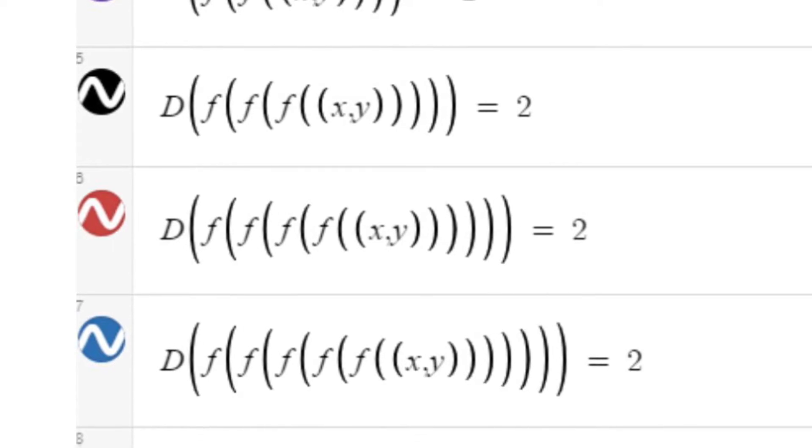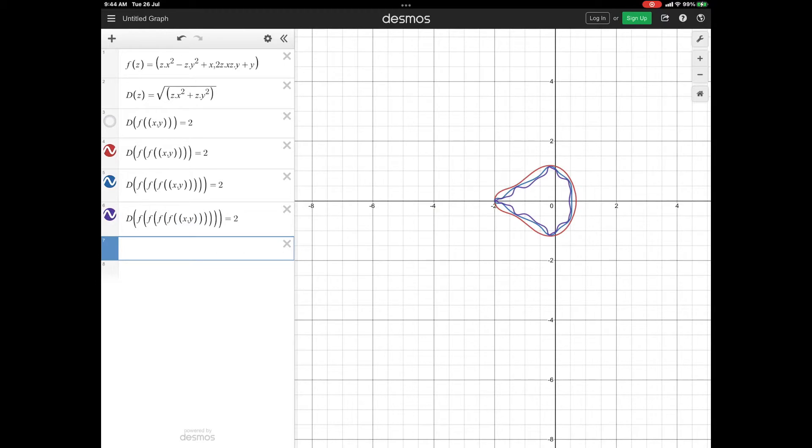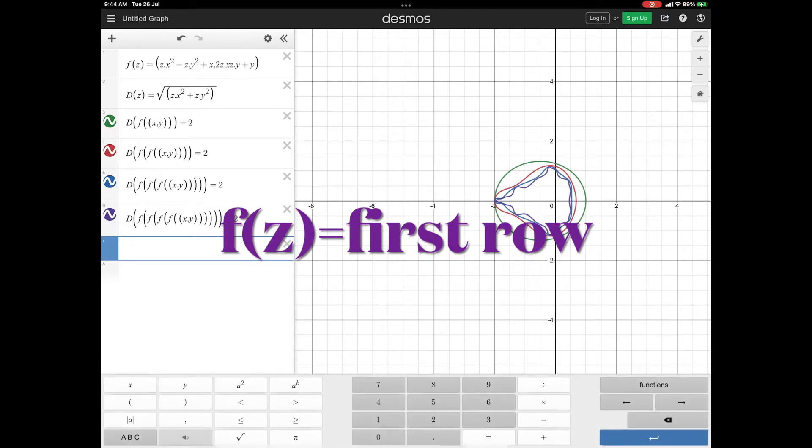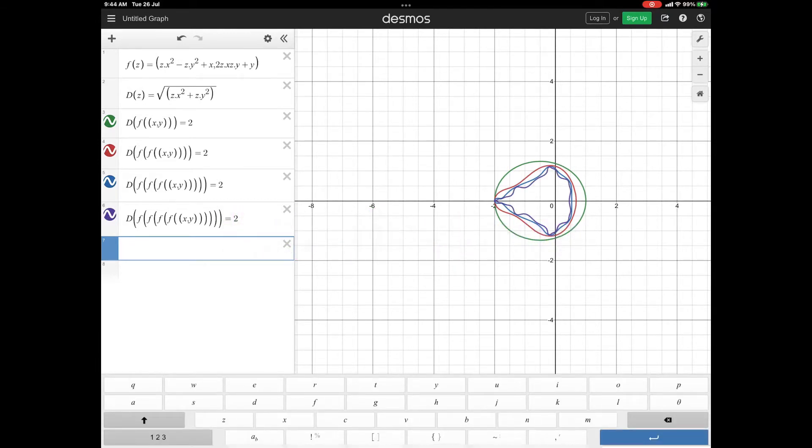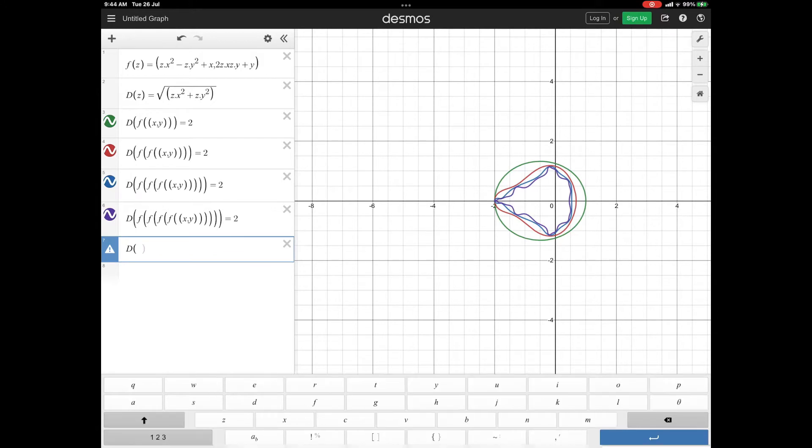Take your Desmos calculator and start typing f of z. So, look at this pattern. I am going to tell you how to develop this pattern. f of z is equal to, put a bracket, z dot x square minus z dot y square plus x, comma, put 2z dot x z dot y plus y. Please look at the first row. That is the general function f of z.